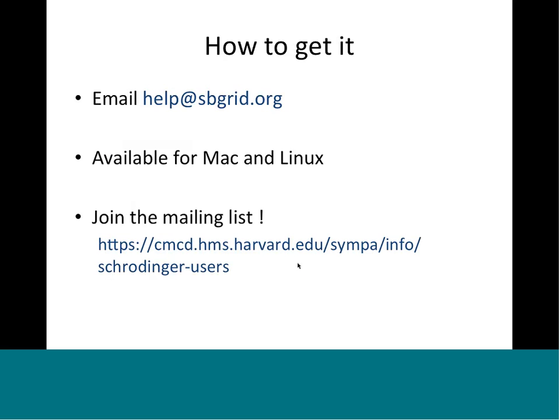So how do you get this? This is in the SBGrid programs tree. It's not there by default, so we ask that you request it — it's pretty big in terms of disk usage, so we don't push it out to everyone. But we'll gladly install it if it's something you're going to use. Just email help@sbgrid.org. There are Mac and Linux versions. We do ask that if you're going to use the SBGrid Schrodinger package, join our Schrodinger users mailing list so we know who's using it. It's a great way to report experiences and talk about problems. You can also email me or help@sbgrid.org to get on that list.